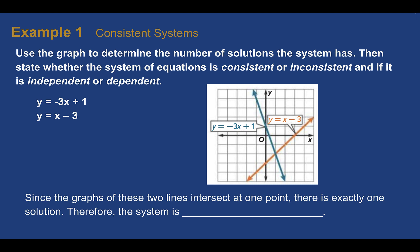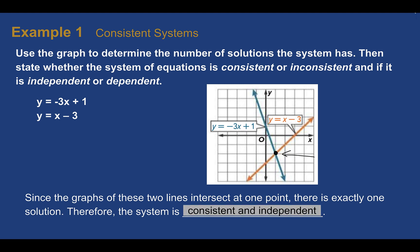Example one: consistent systems. Use the graph to determine the number of solutions the system has, then state whether the system is consistent or inconsistent, and if it is independent or dependent. We look at the graph and see that the two lines intersect at one point — that is the solution. The coordinate that works in both lines at the same time is at that point. Since the graphs intersect at one point, there is exactly one solution, so this system is consistent and independent.